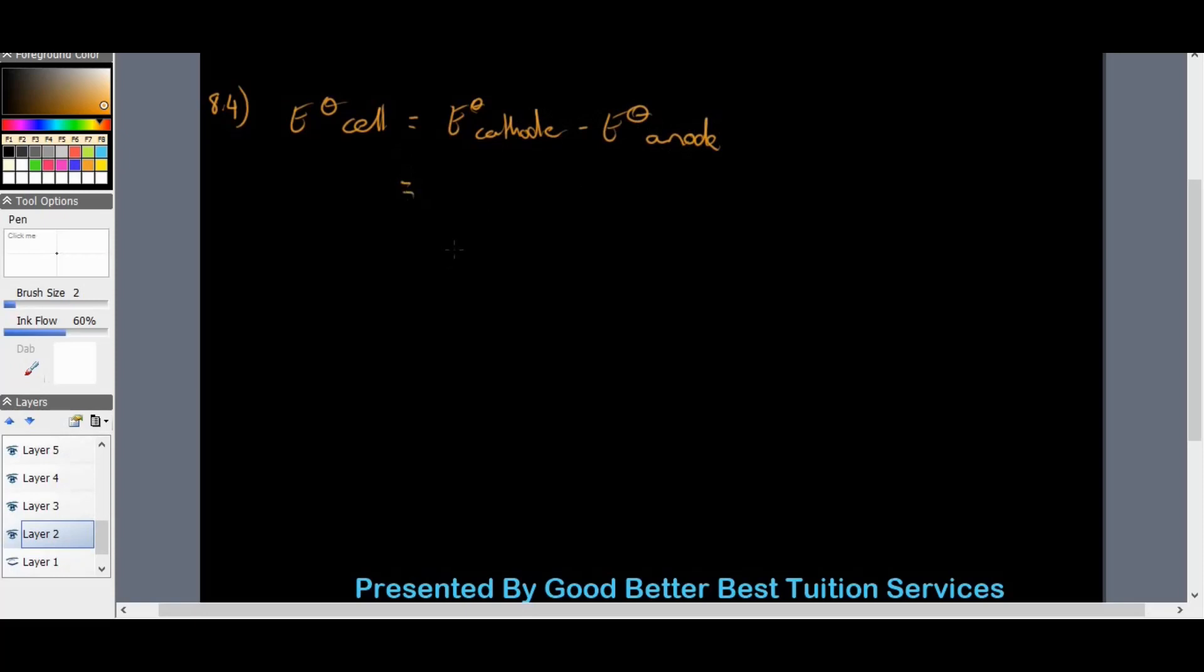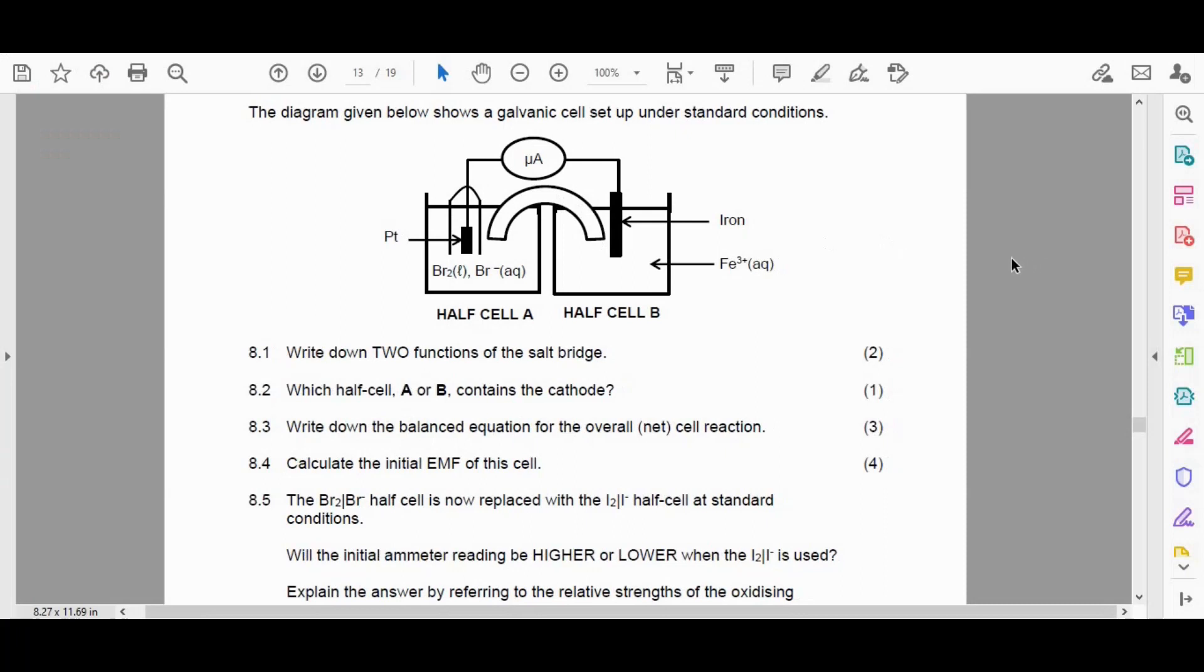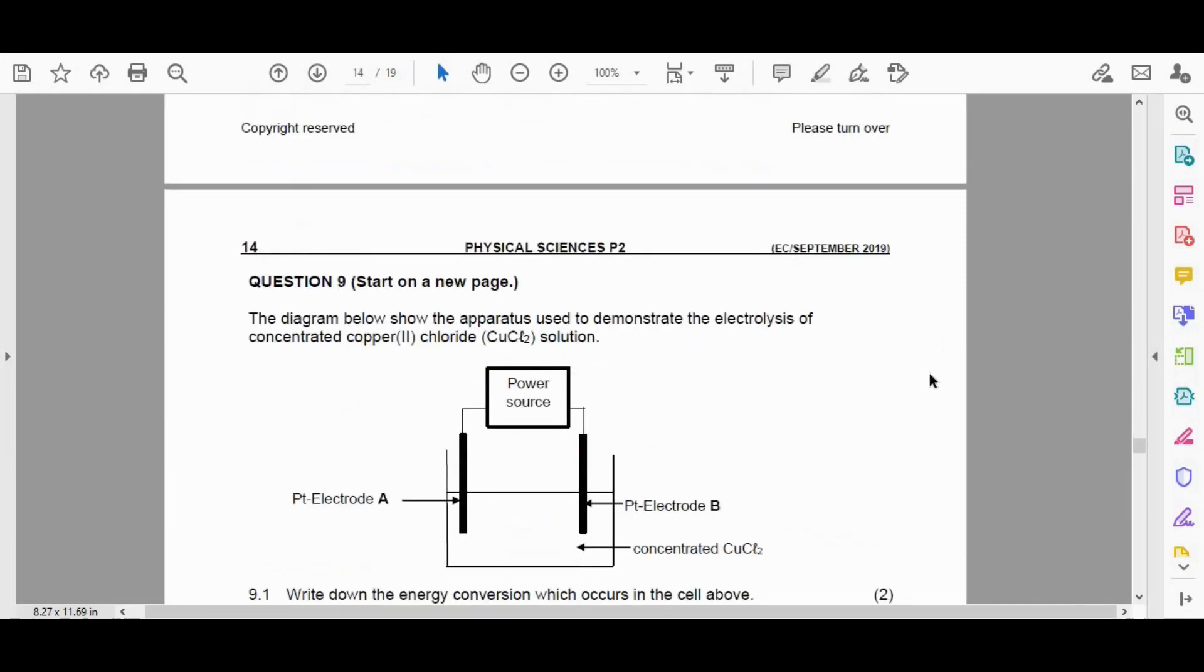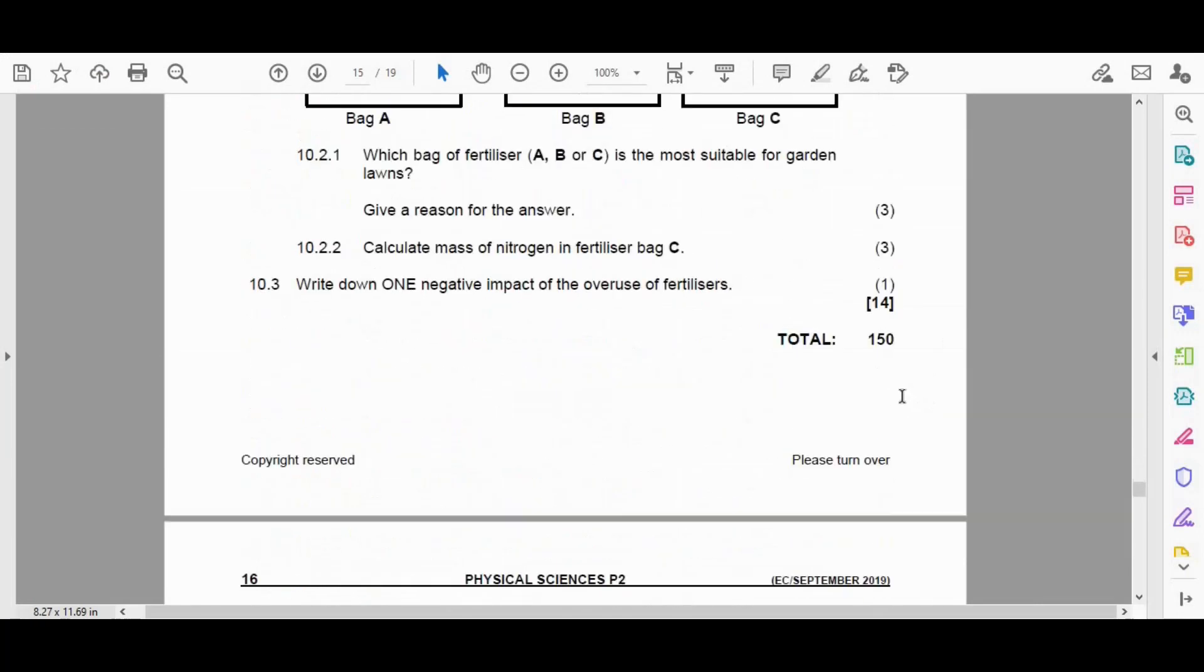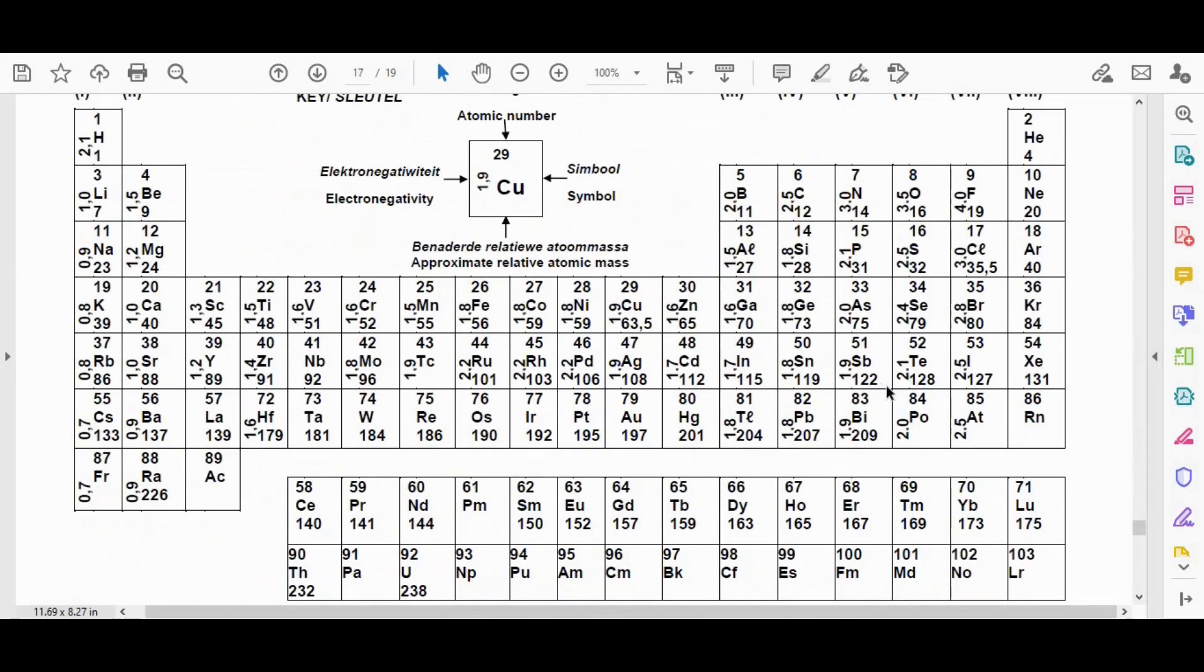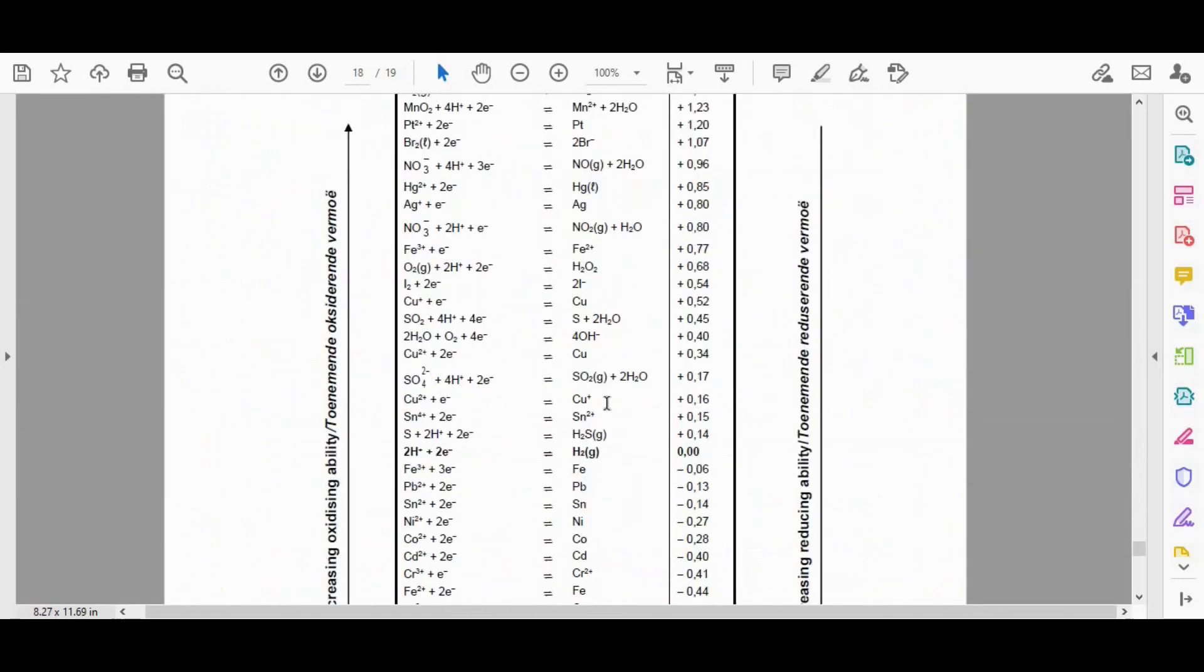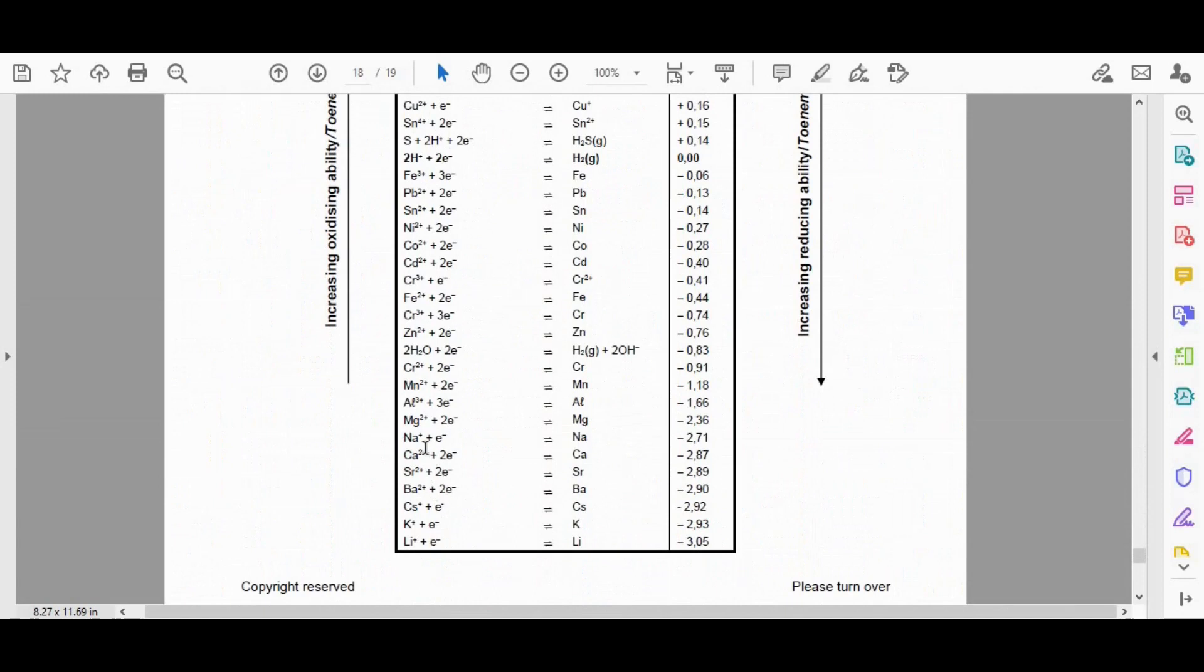So we know that at the cathode, that was positive 1.07 for the substance Br. And we're going to minus. All right. Now, because we need to just go and pick the right half reaction, which was the Fe3 plus half reaction and not the Fe2 plus half reaction.